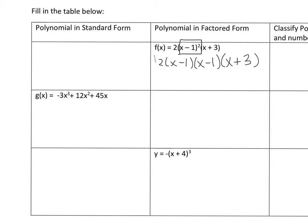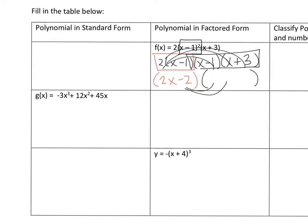Then I'm going to multiply these two to get 2x minus 2, and then I can distribute this. After I do that, I can distribute this further. So in the end you're going to get f of x equals 2x cubed plus 2x squared minus 10x plus 6.